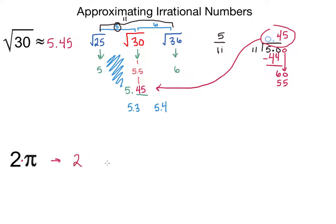So we're going to do two times the approximation for pi. I hope this is one you just kind of have to memorize, that pi is approximately three point one four. So if we're approximating this we can do three point one four times two.